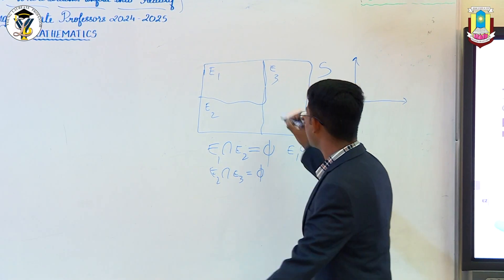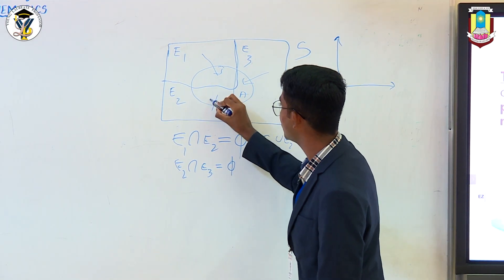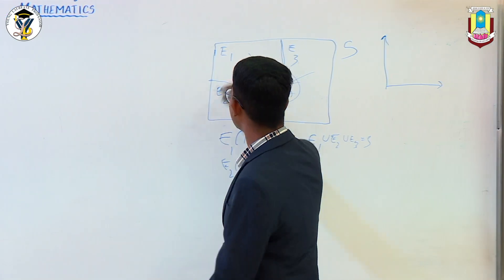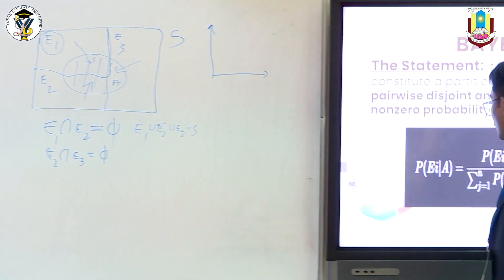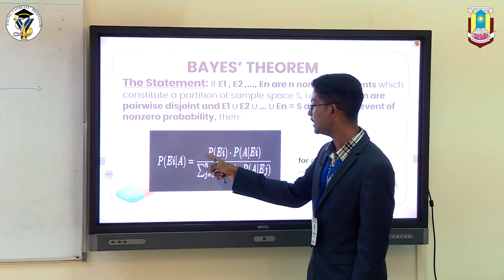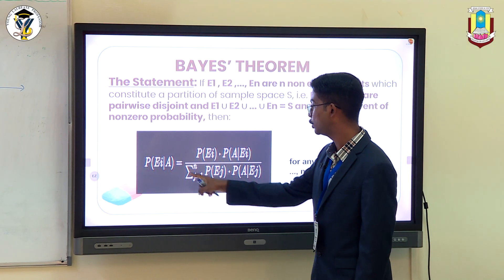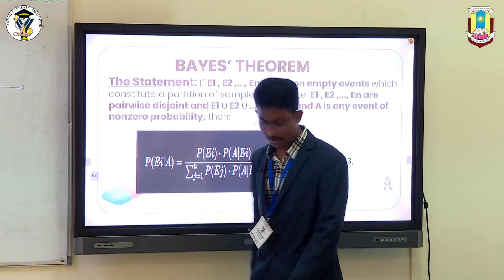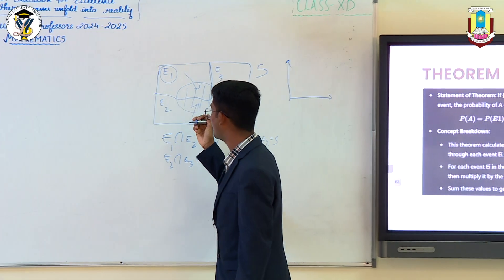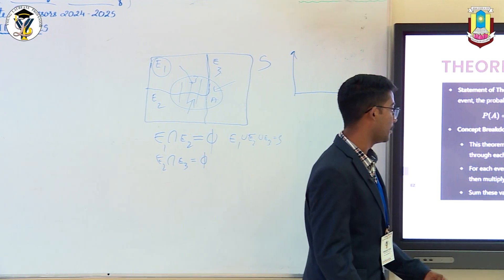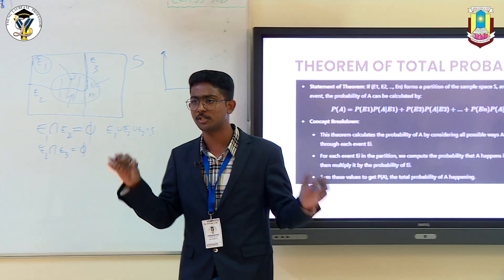And if you have some other event A across the sample space, whose occurrence depends upon event E1, event E2 and event E3, and if you are asked to find the probability of an event E1, given that this event A has already occurred, then Bayes' Theorem allows you to do so using this formula. That is, the initial probability of event E1 multiplied by the probability of A given E1, divided by the total probability of A. The total probability of this given event A can be found by the theorem of total probability. It helps you to calculate the total probability of an event A by considering all the possible ways in which A can occur.